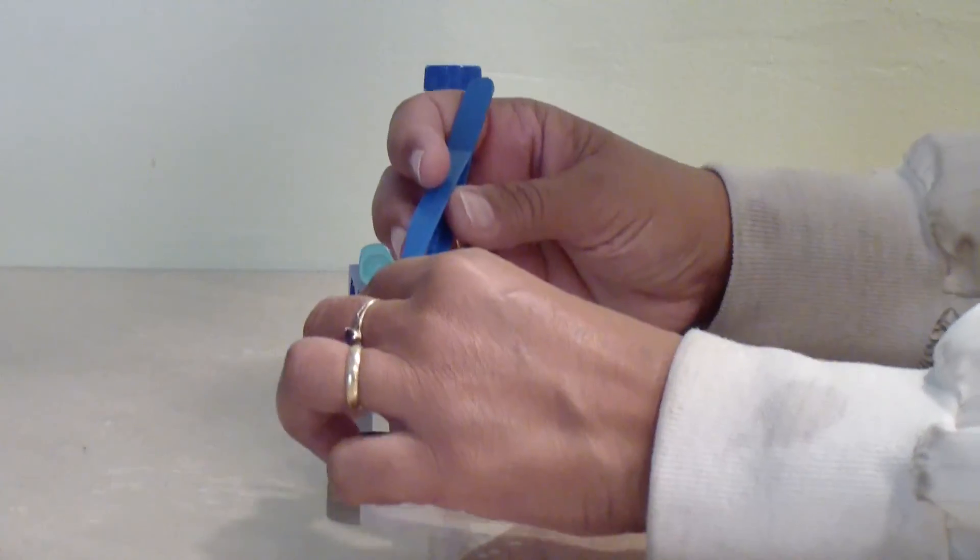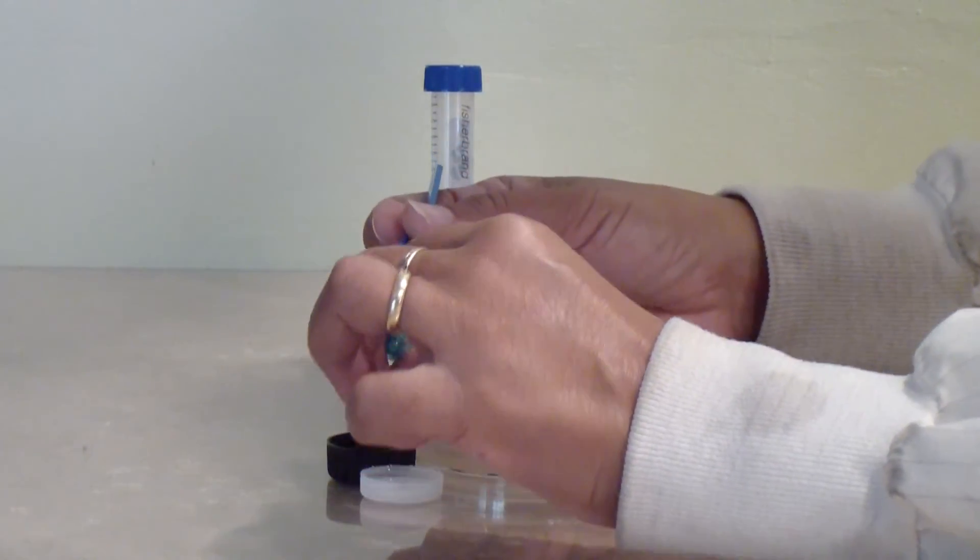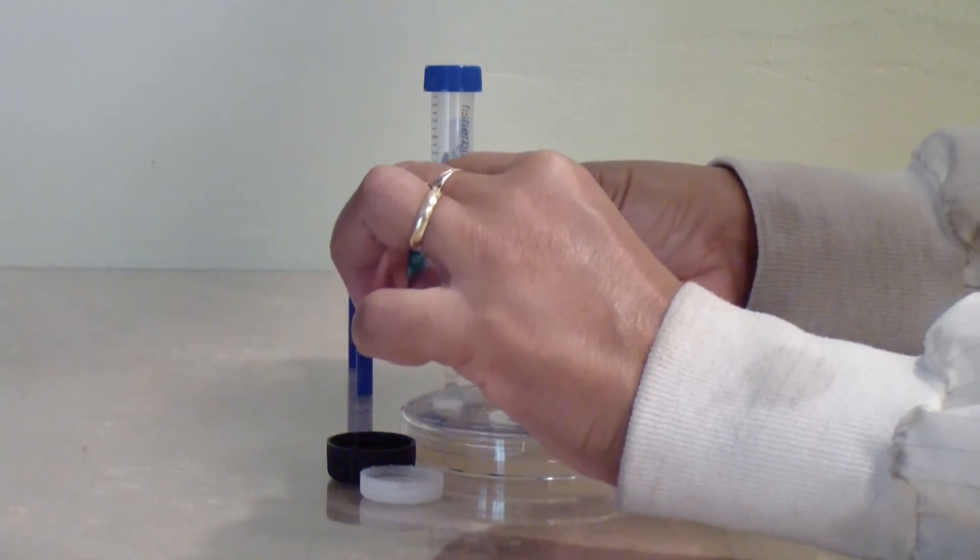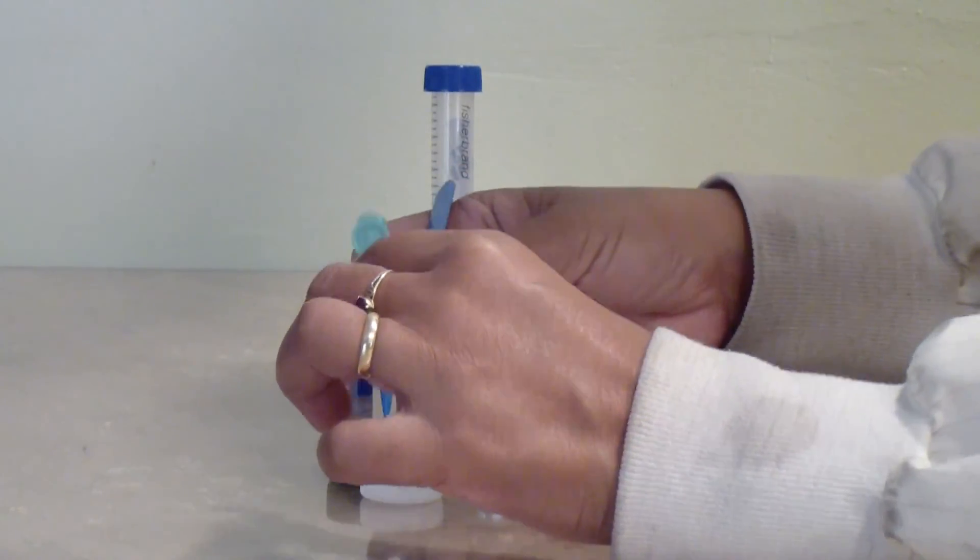With forceps, take the blank discs and dip them into the compounds you would like to test. Allow the compound to saturate the disc. Just a few seconds is usually enough.